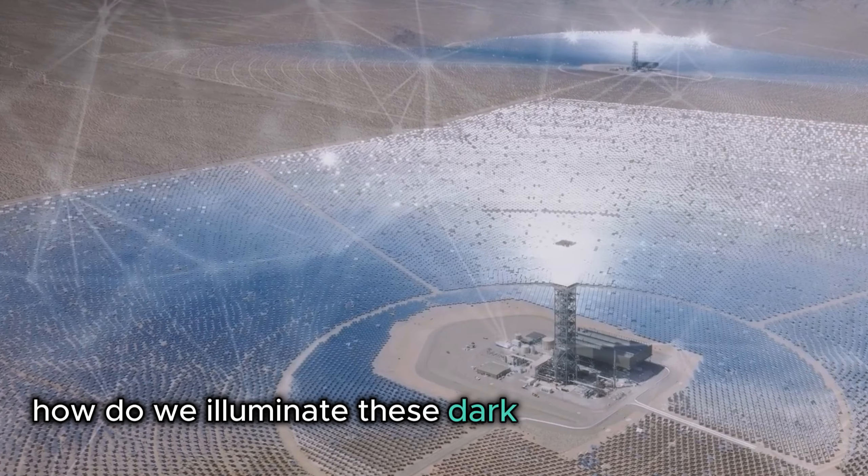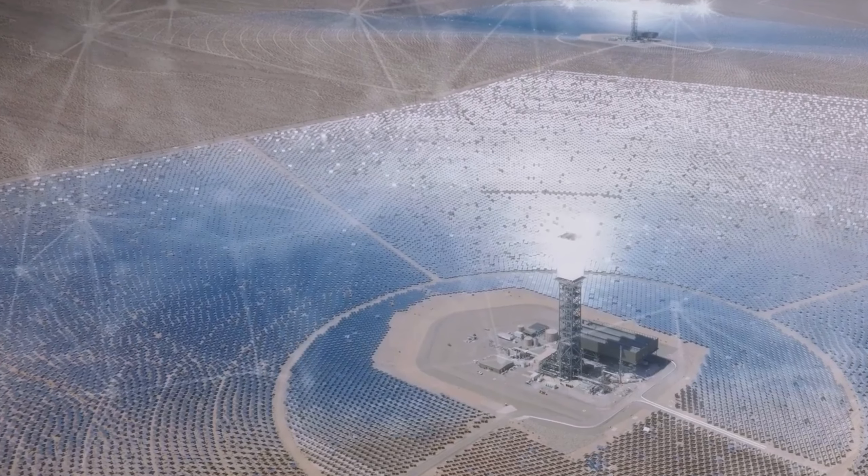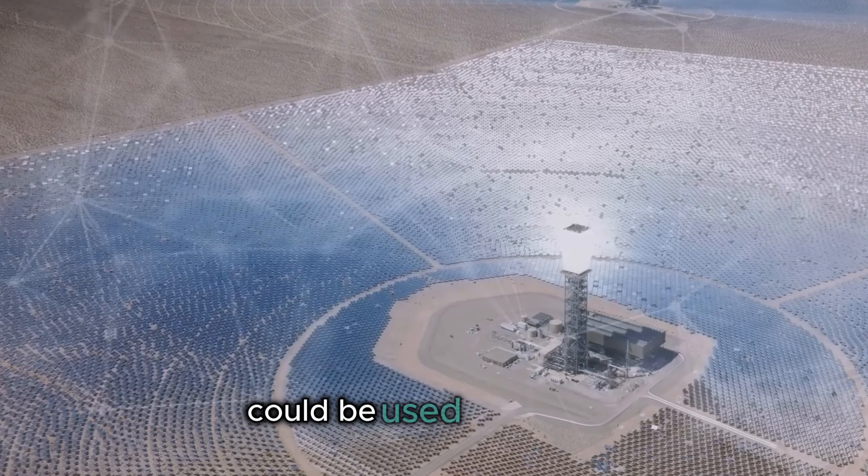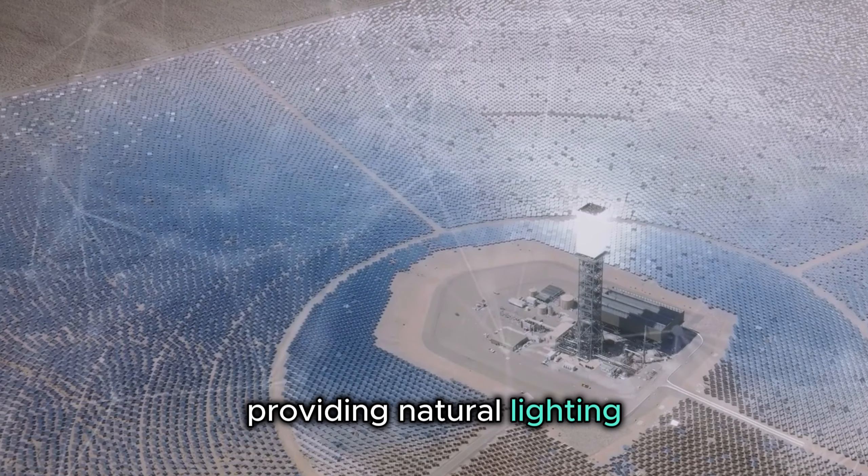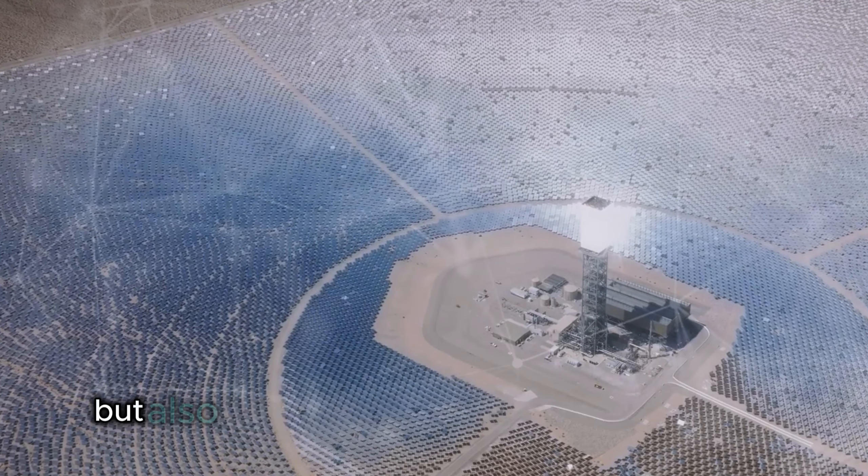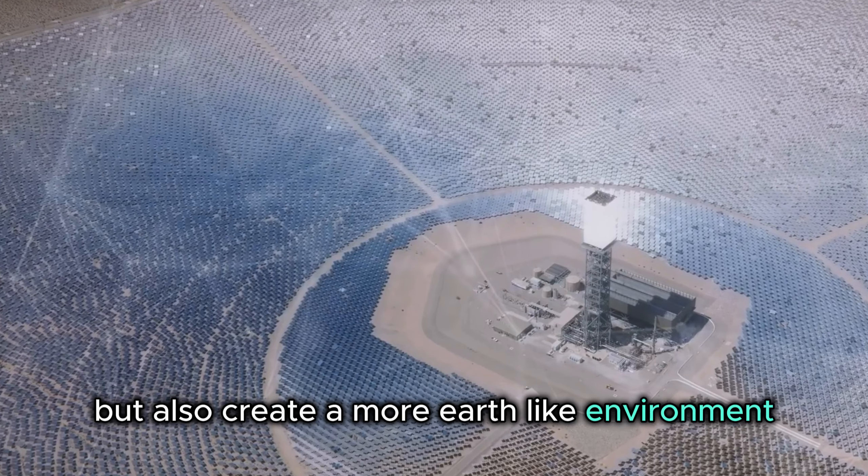How do we illuminate these dark subterranean spaces? Solar panels and mirrors could be used to capture and direct sunlight into the lava tubes, providing natural lighting. This would not only save energy, but also create a more Earth-like environment for the inhabitants.